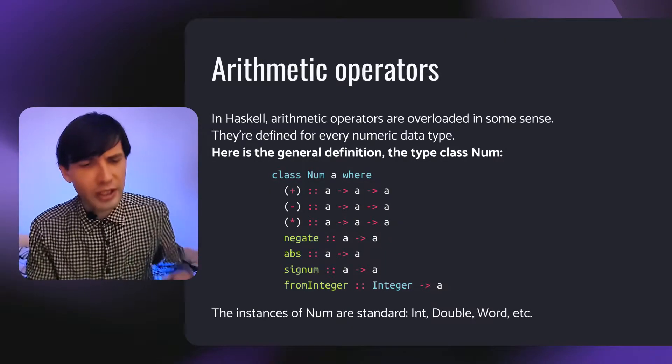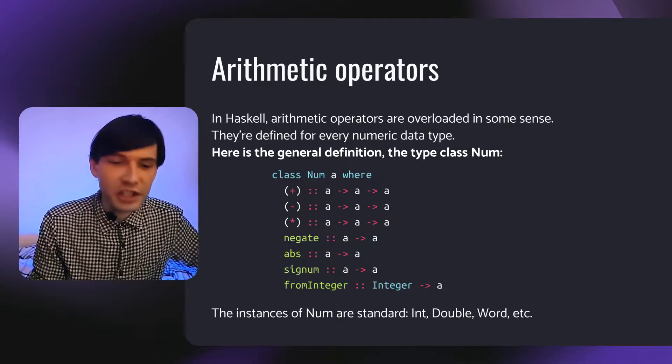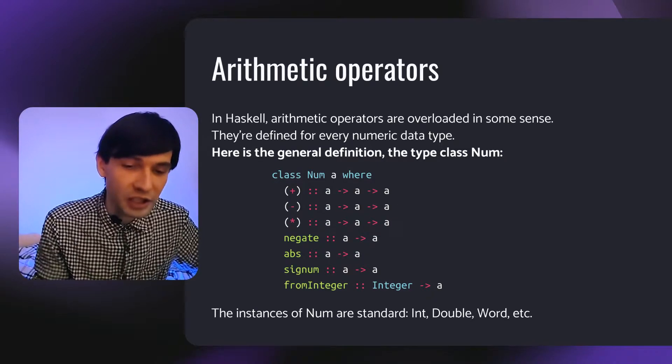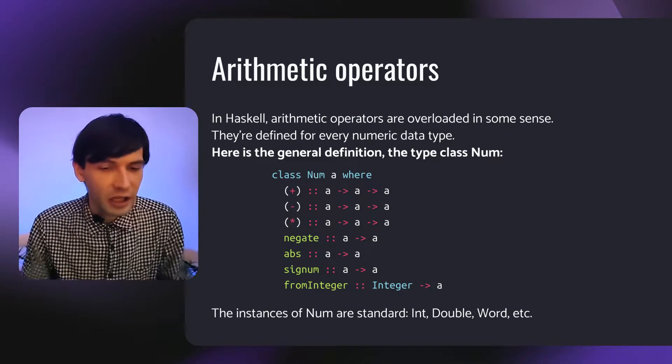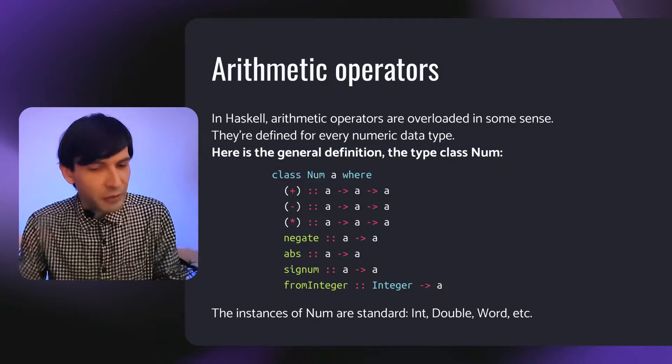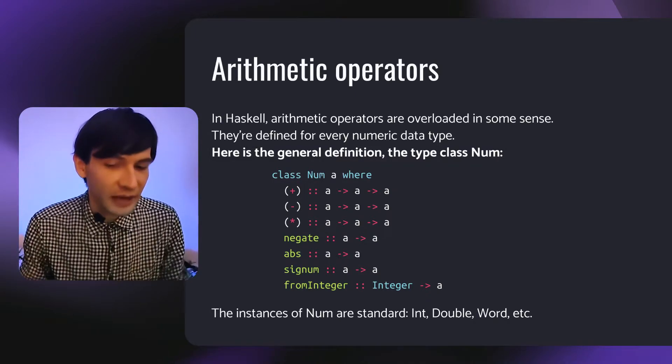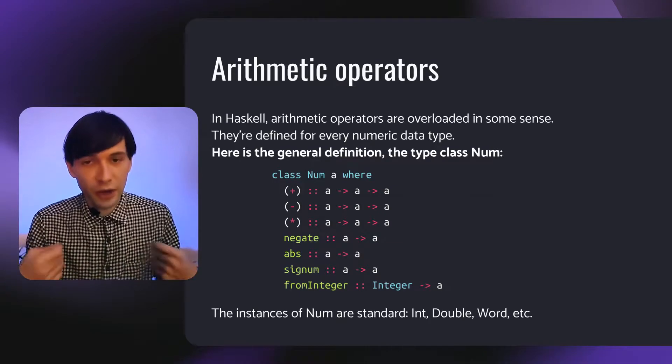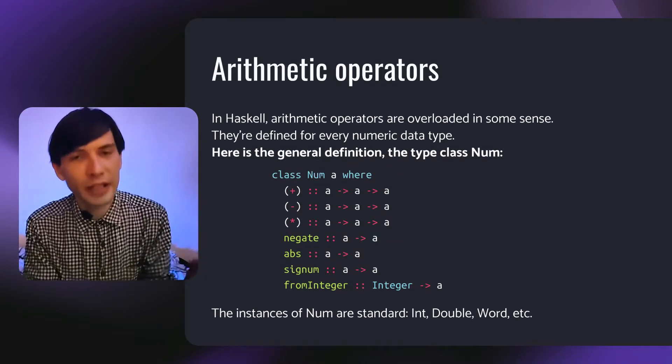The first example is related to arithmetic operators. In this language, Haskell, our favorite language, arithmetic operators are overloaded in the following sense. All those operators and operations are defined for every numeric data type. So here is the general definition, the type class called NUM as numbers, the type class of numbers.